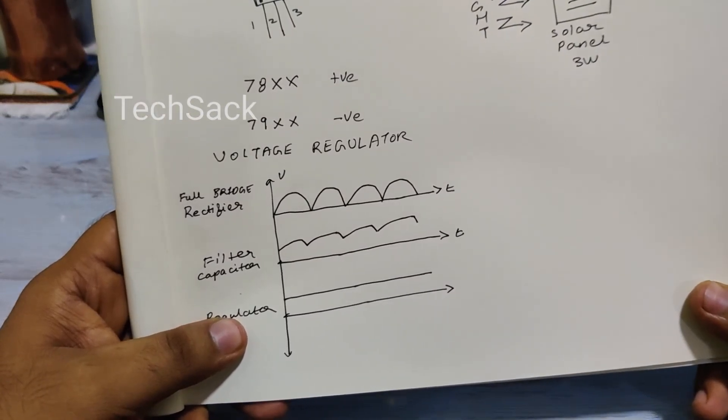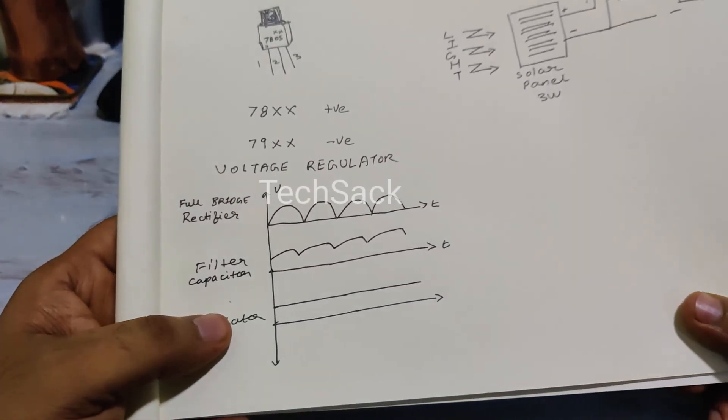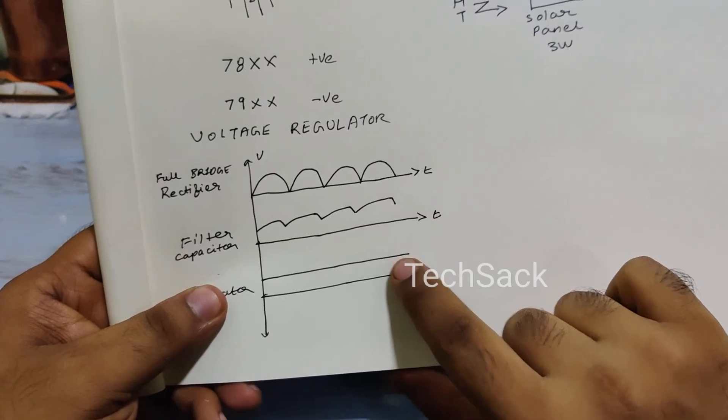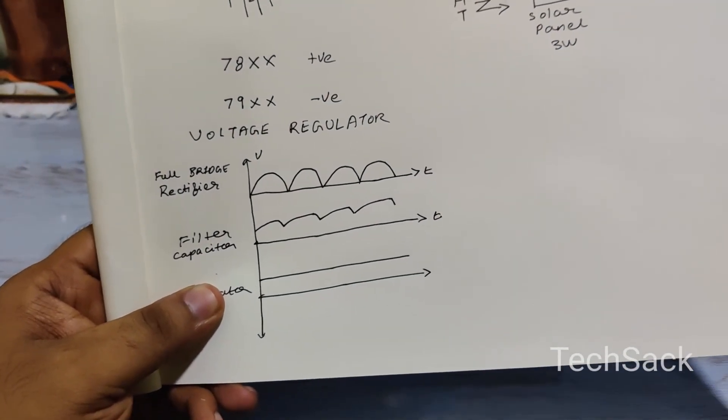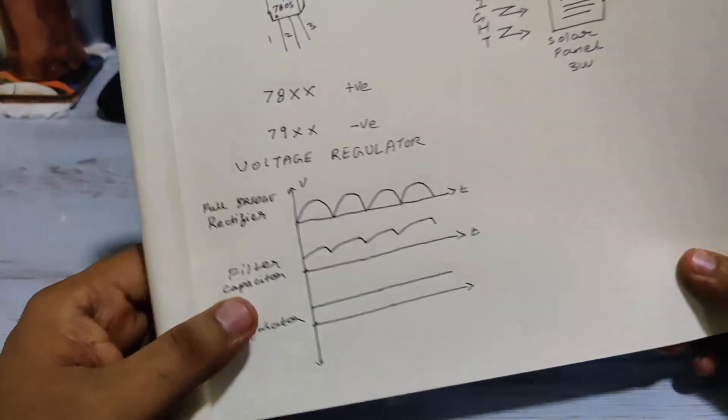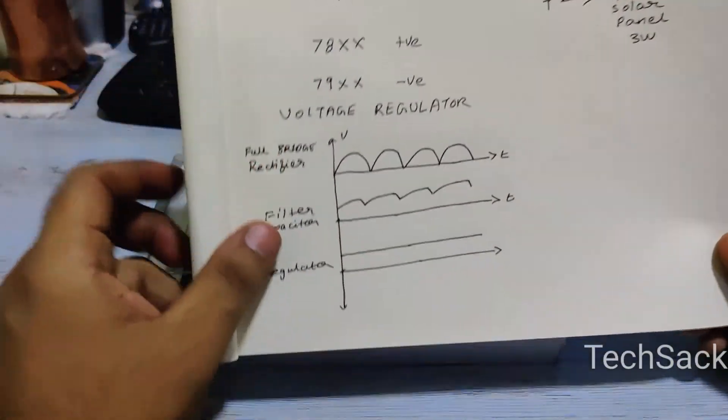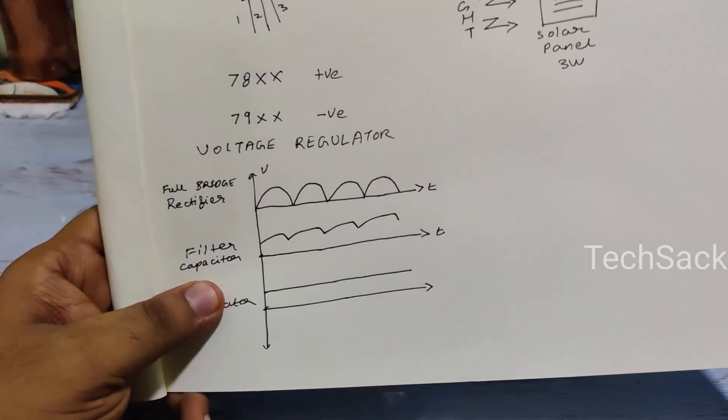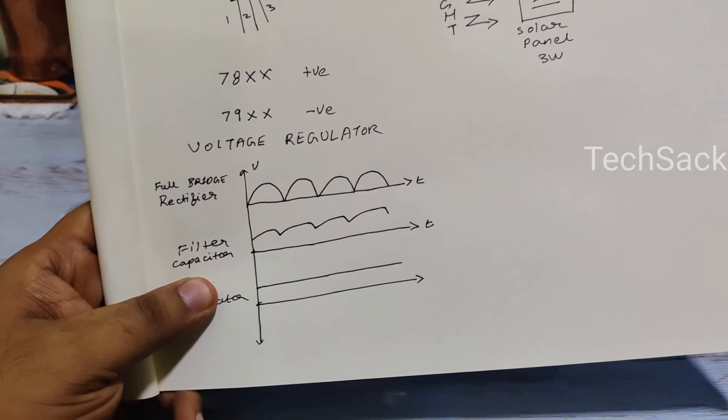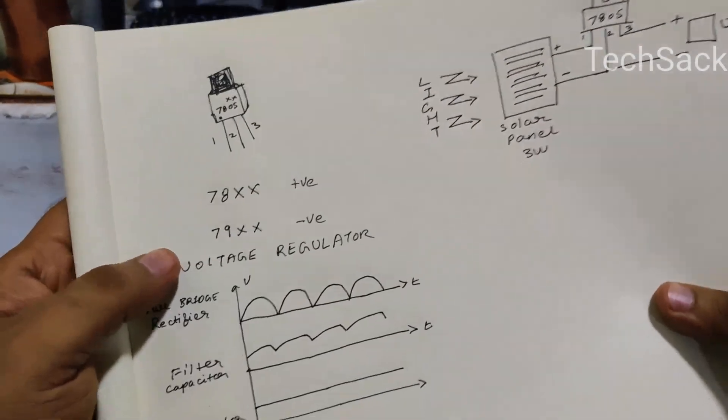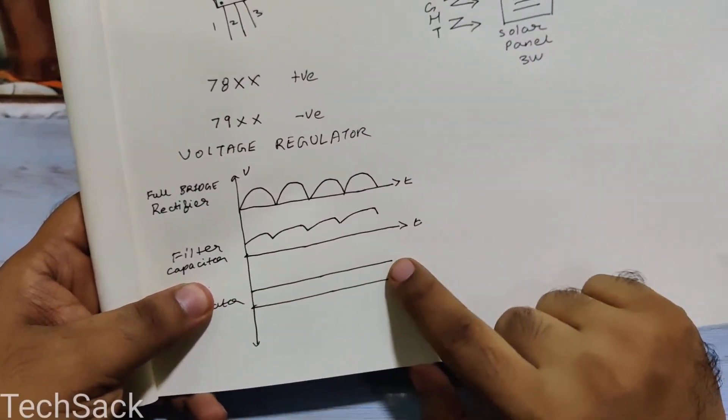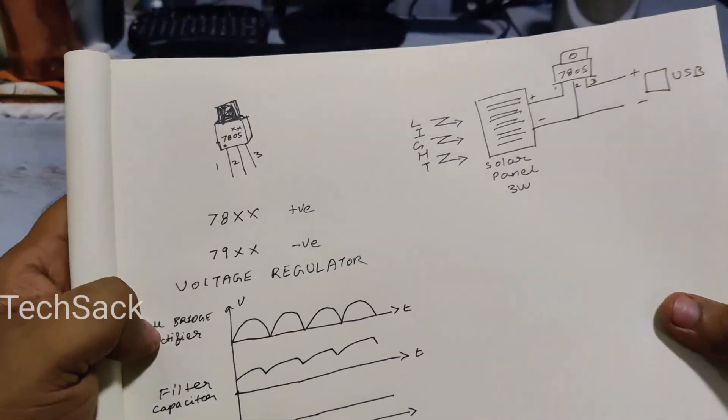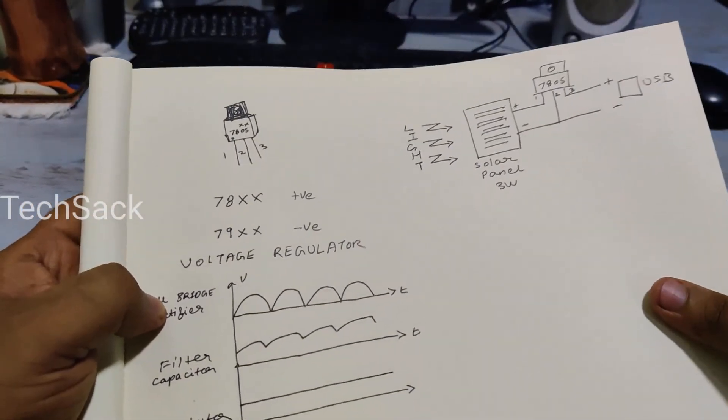However, there are certain applications which are voltage sensitive and we need a constant DC voltage. And if you have ever experienced, most of the time as the current increases, the voltage drops across the load. In order to avoid all this, we use a voltage regulator which gives a constant DC output irrespective of the current drawn by the circuit.